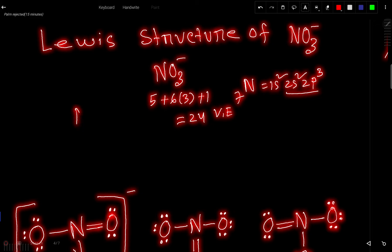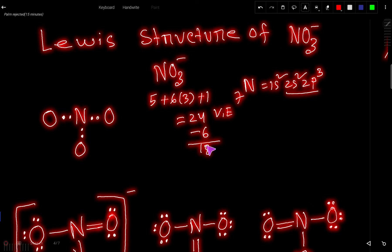So let us connect. For connecting two atoms we need two dots or one single bond. So here I am showing dots. So for connecting we have used six dots, that is six valence electrons. So we have 18 valence electrons left.